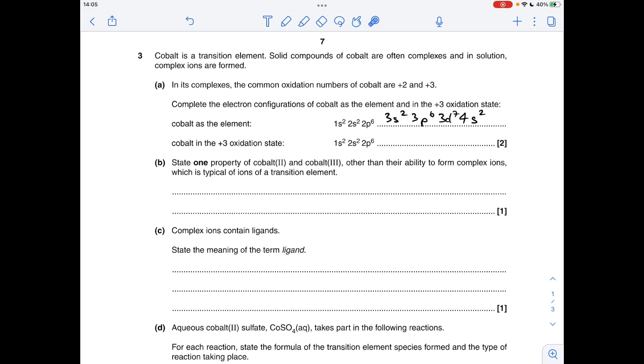You could have put 4s² then 3d⁷ or the way I've done it. Now the reason I write it this way is because when you form an ion of a transition element you take the 4s electrons out first, so it's a bit easier to sort of work your way back in. So we need to lose three electrons, so they will go and that will go down to 3d⁶.